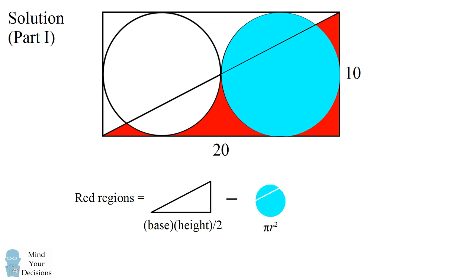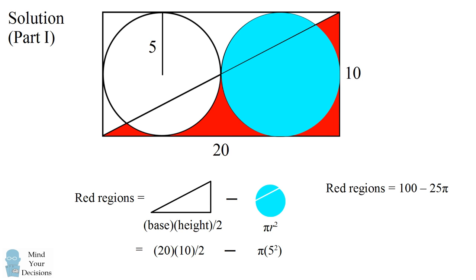The right triangle has a base of 20 and a height of 10. The circle has a radius equal to half the height of the rectangle, so its radius is equal to 5. So the circle has an area of pi times 5 squared. This means the area of the red regions is equal to 100 minus 25 pi, or approximately 21.46.